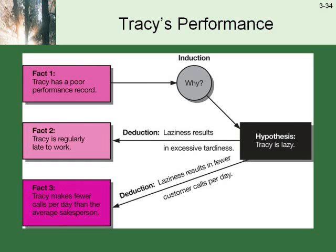Another example: Tracy has a poor performance record — that's the fact, the problem. Inductive reasoning asks why, and I may form the hypothesis that Tracy is lazy. Through deductive argument: Tracy is lazy; laziness results in excessive tardiness; therefore Tracy is regularly late for work. Or with the same hypothesis: Tracy is lazy; laziness results in fewer customer calls per day; therefore Tracy makes fewer calls per day than the average salesperson.